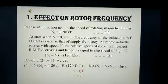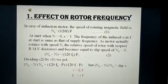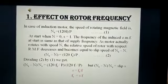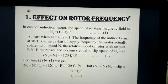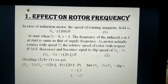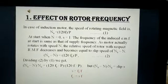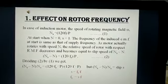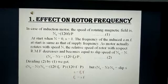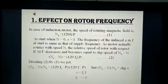Effect of slip on rotor frequency. In the induction motor, the speed of the rotating magnetic field is called the synchronous speed. The synchronous speed is given by NS = 120F / P, where F is the frequency and P is the number of poles. At the starting condition, speed is equal to 0 and slip is equal to 1. As long as slip is equal to 1, the frequency of the induced EMF is same as that of the supply frequency.